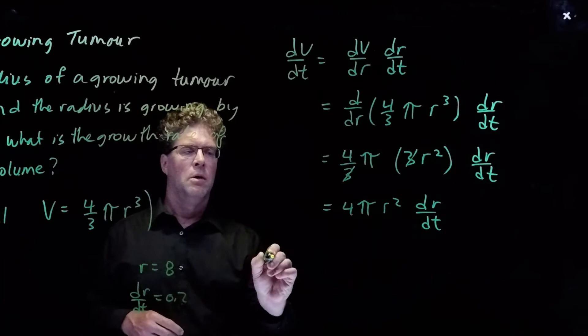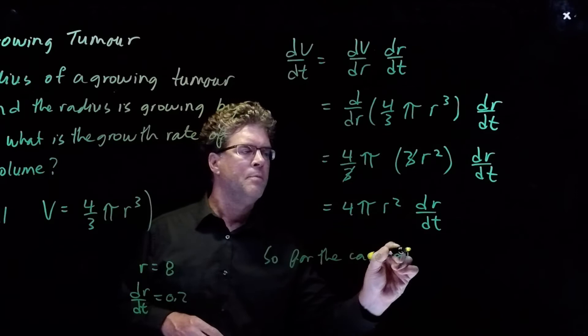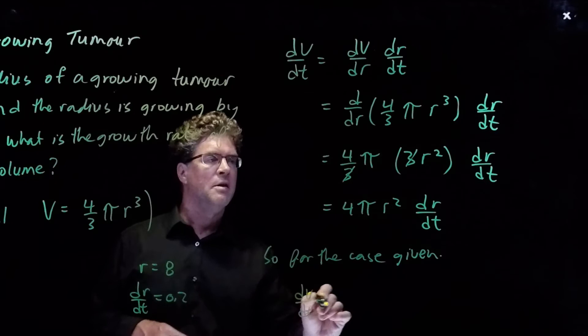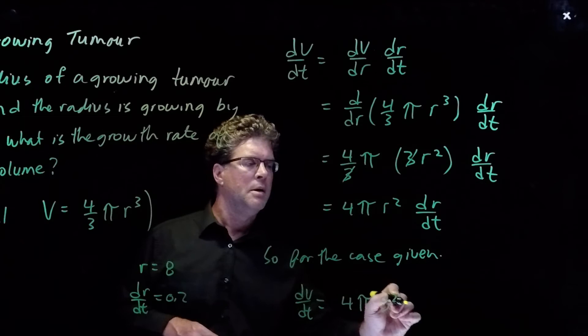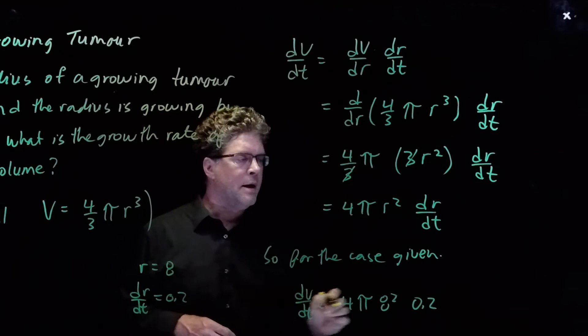So for the case given, we have dV/dt is equal to 4 pi times 8 squared times 0.2.